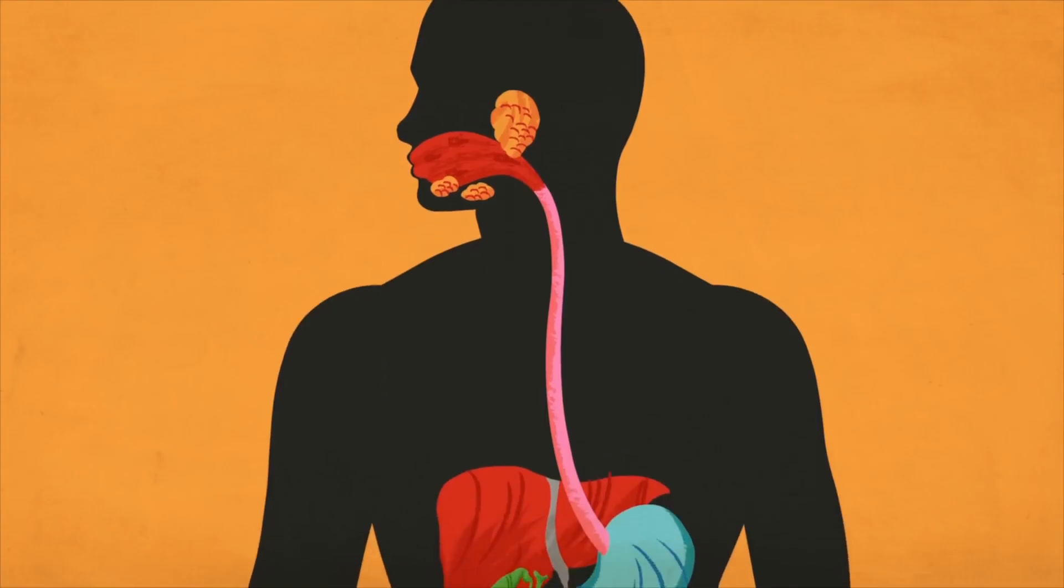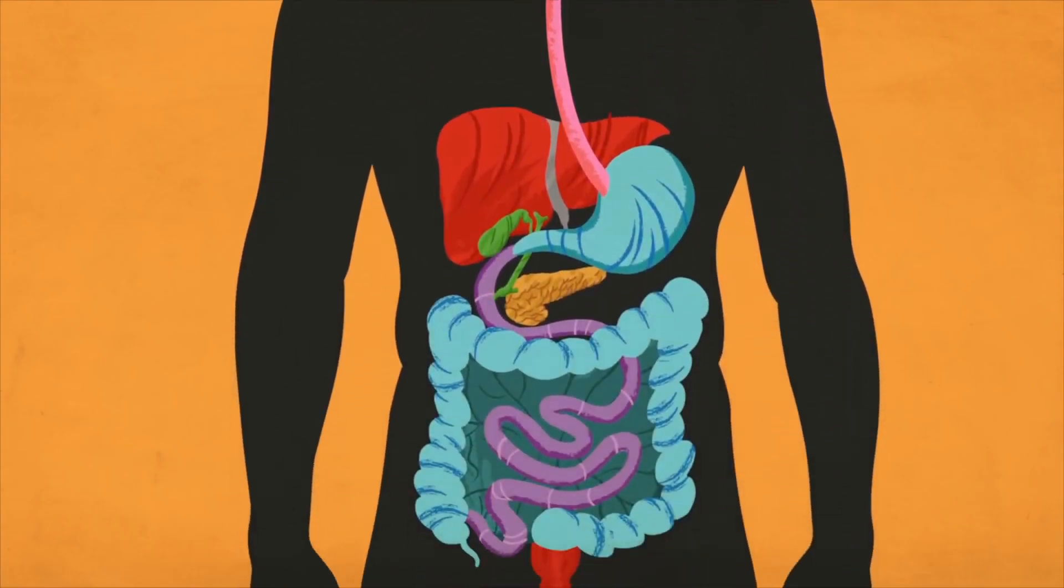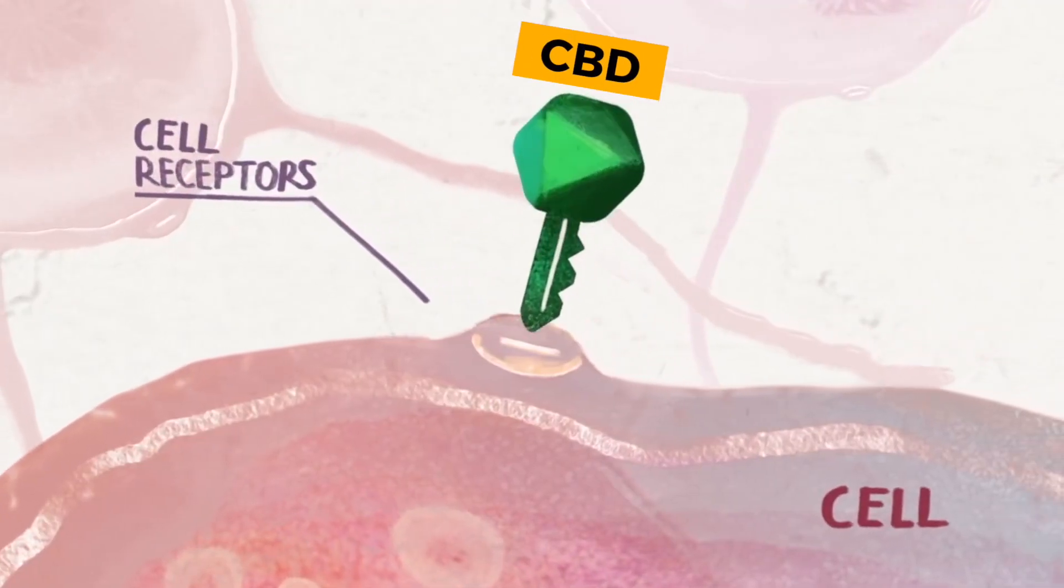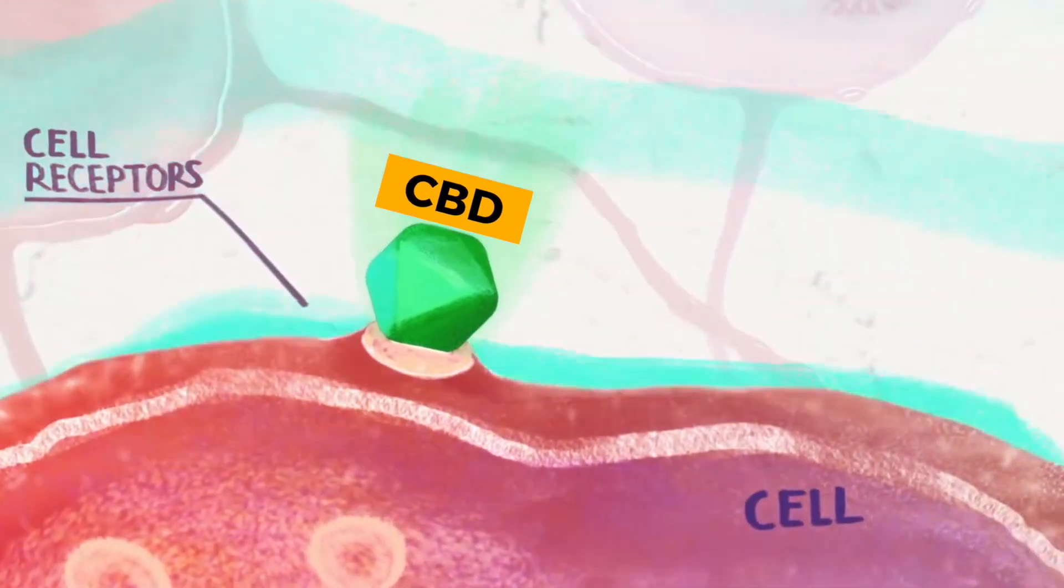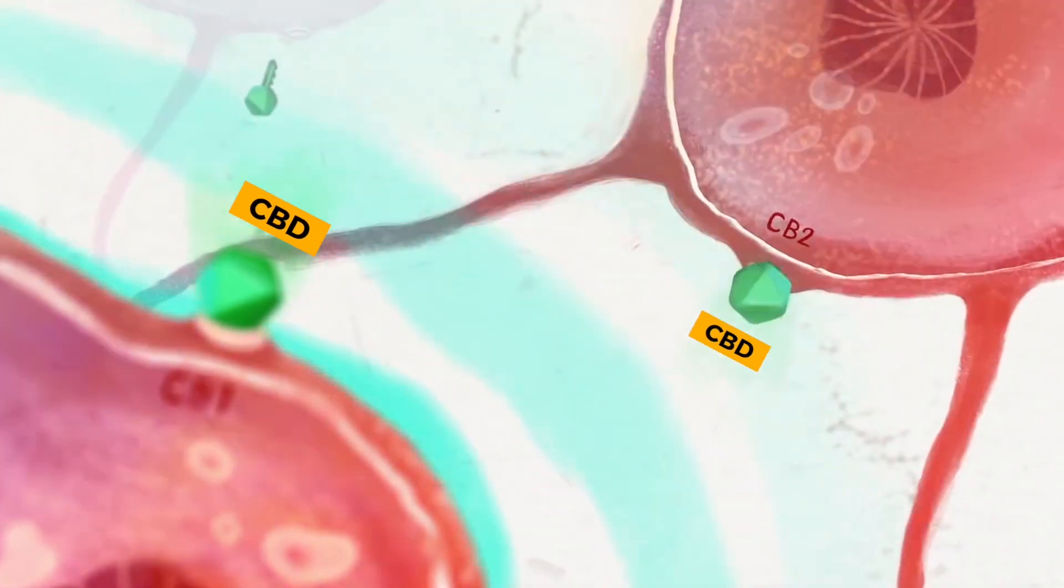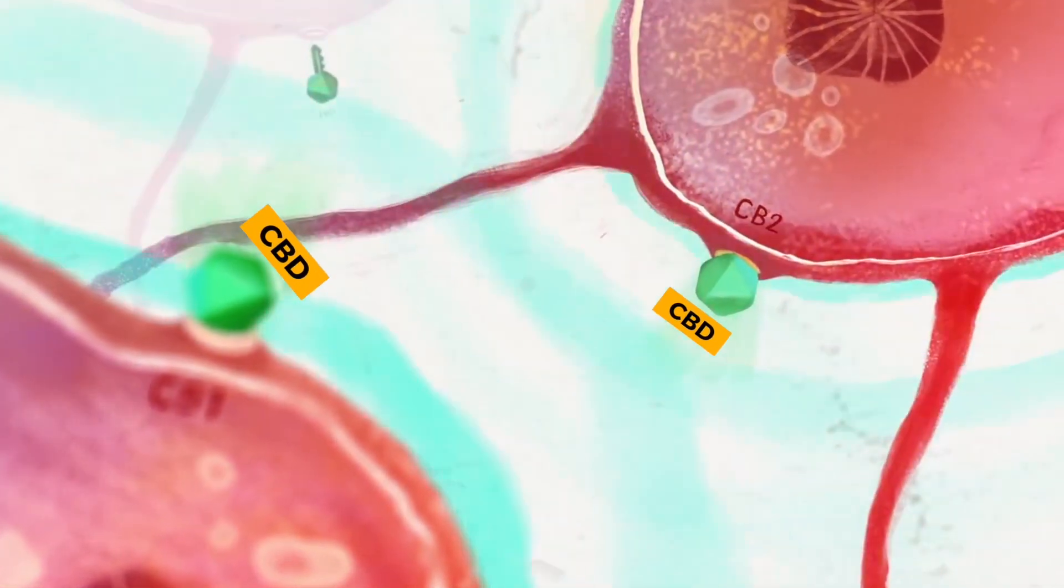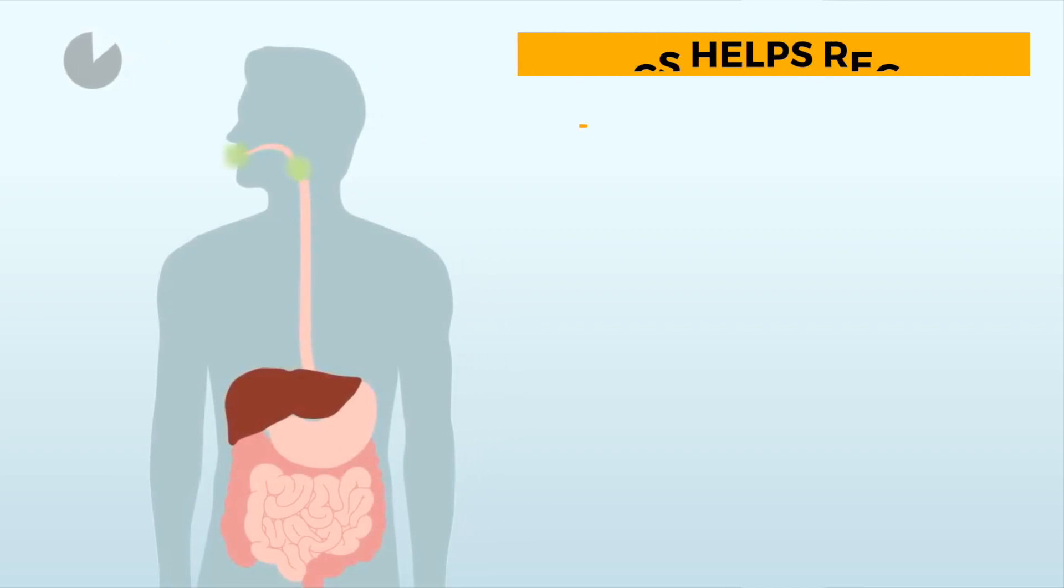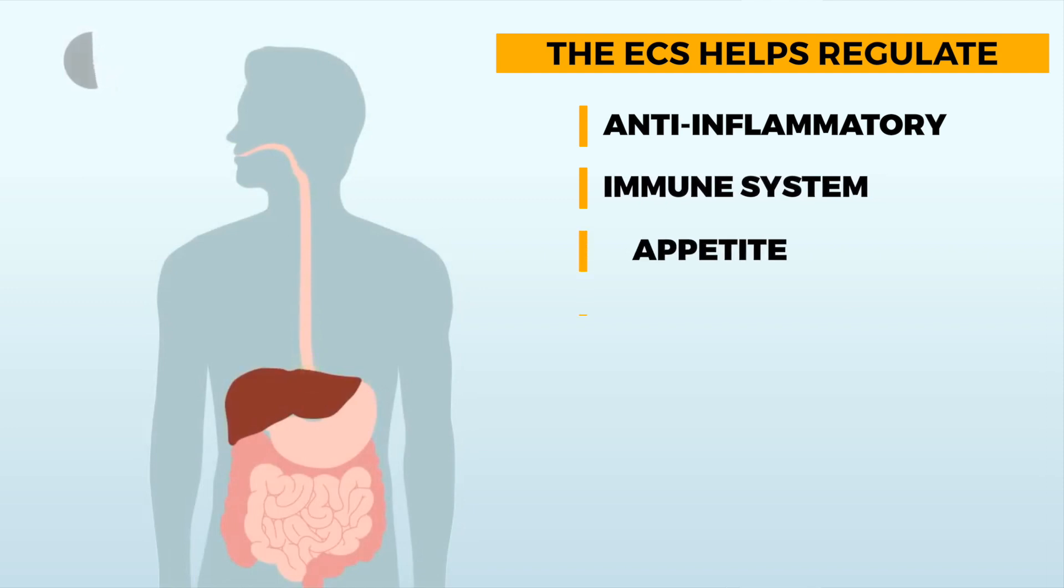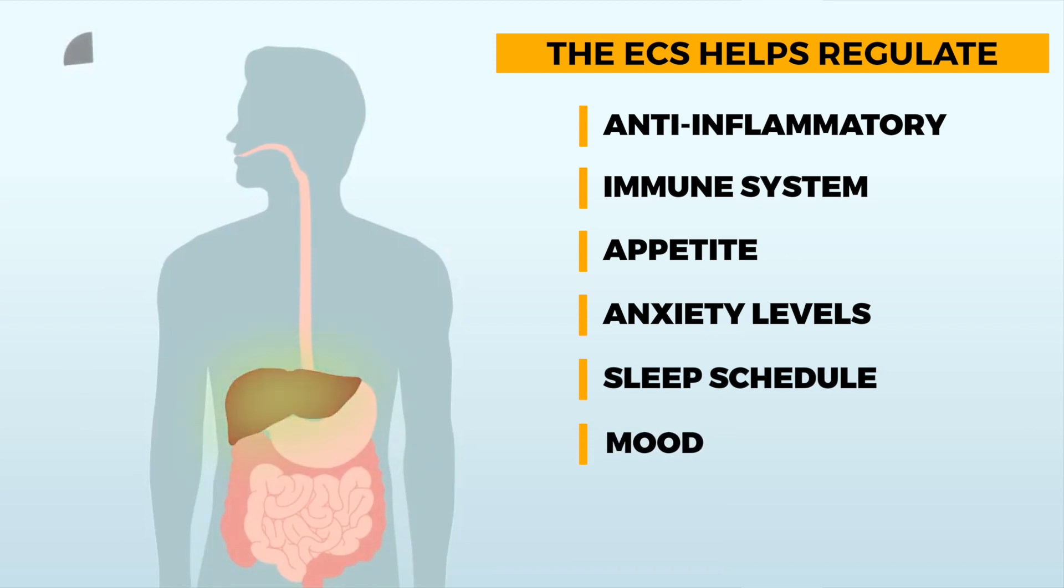CBD activates these receptors, which in turn boost some of the ECS's most vital functions, resulting in homeostasis or balance throughout the body. The ECS is involved in many important jobs. These jobs include regulating your anti-inflammatory response, immune system response levels, appetite, anxiety levels, sleep schedule, mood, pain perception, and much more.